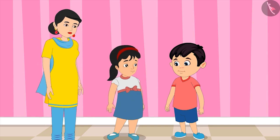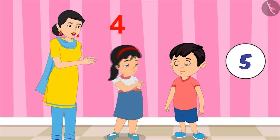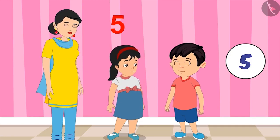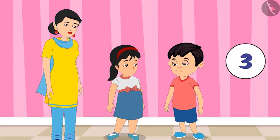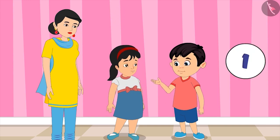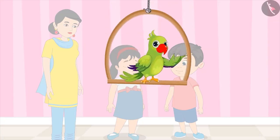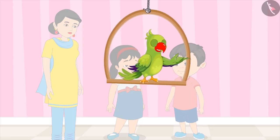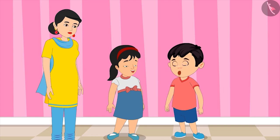Chotu calls out: Five! One clap, two claps, three claps, four claps, and five claps. Then: Three! One clap, two claps, and three claps. Then: One! One clap. Then: Zero! Sister and mother were about to clap, but they quickly lowered their hands. Did you enjoy playing this game?